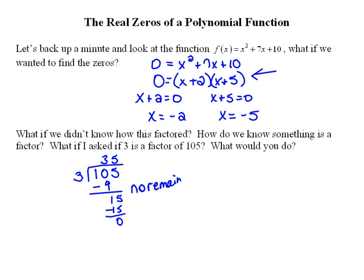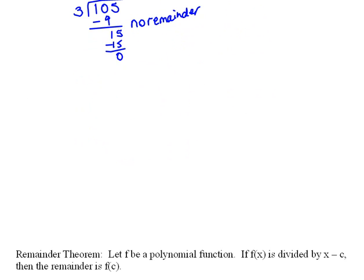Well, what about that problem that we just did up here? What if I asked, is x plus 2 a factor of this? And I didn't know how to factor. I didn't know how to go from the quadratic to the binomials. But we do know that supposedly, if it's a factor, then it should divide in evenly. So if I were to take and divide that original polynomial by that factor, that potential factor of x plus 2, we could do long division.